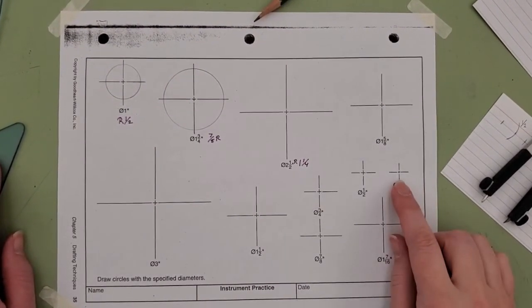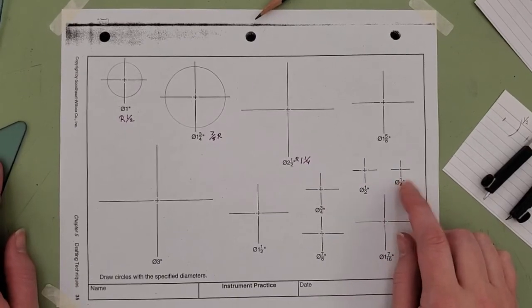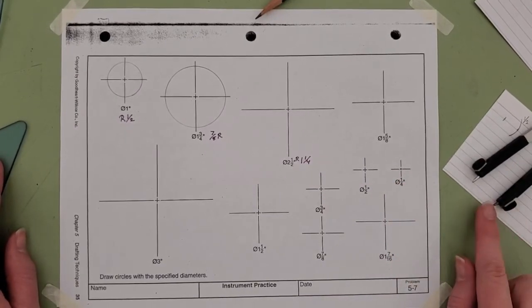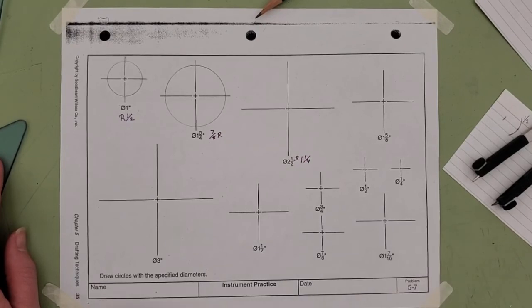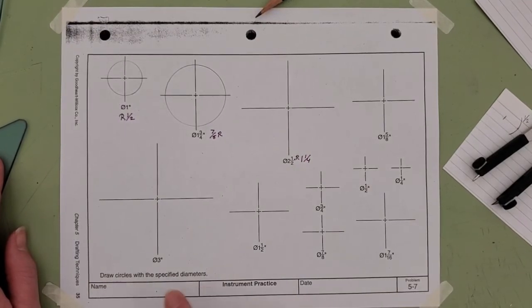We're learning how to do this correctly so we can do it correctly all the time. Take your time, don't give me ovals, and make sure that you have a sharp compass point in order to do this. Use eighth inch guidelines and letter your name, then turn it in.